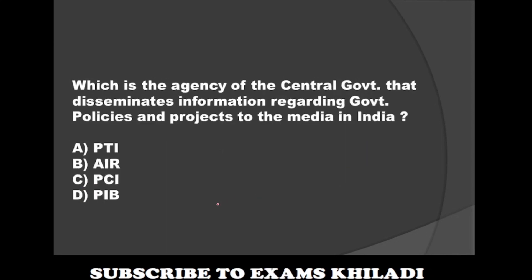Question: Which is the agency of the central government that disseminates information regarding government policies and projects to the media in India? Option A: PTI (Press Trust of India). Option B: AIR (All India Radio). Option C: PCI (Press Council of India). Option D: PIB (Press Information Bureau). The correct answer is PIB — Press Information Bureau.